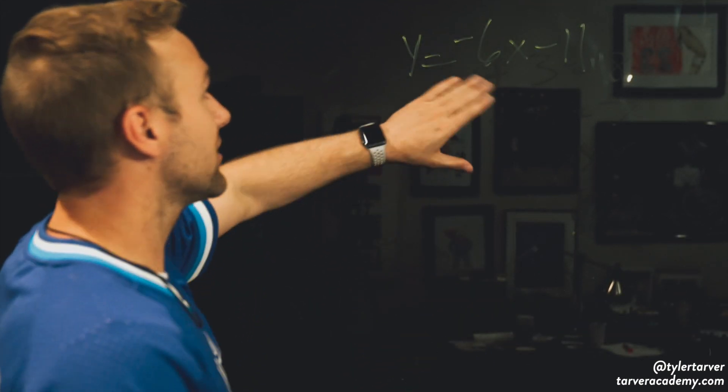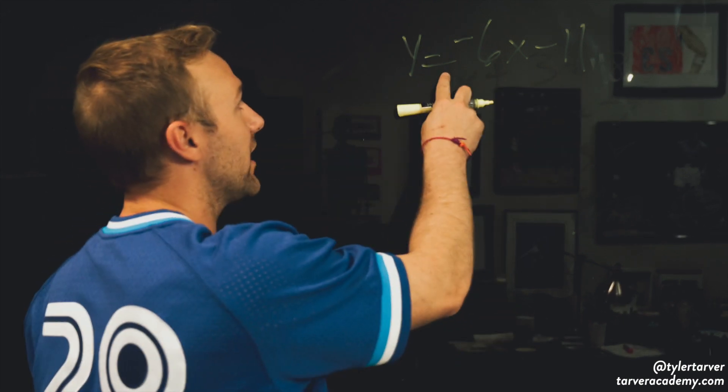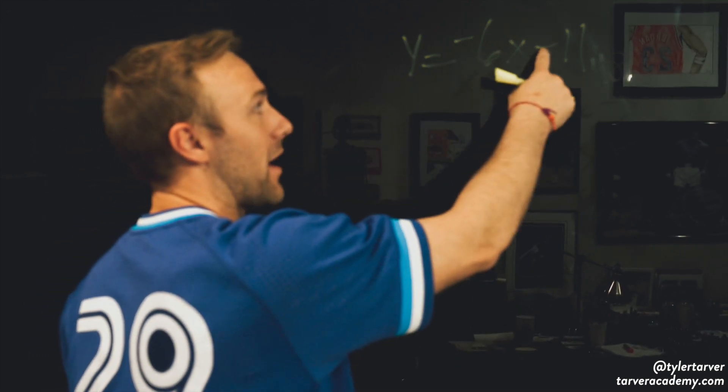So we're talking about slope-intercept form. What we want to do is, say we're given an equation. So we got y equals negative 6x minus 11. In this problem, we want to find out what is the y-intercept of this.